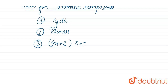Let us take benzene as an example. As you can see, it is a cyclic structure and also a planar ring, so the first and second conditions are satisfied. Next, checking four n plus two pi electrons: counting the pi electrons — one, two, three, four, five, six — we have three double bonds.